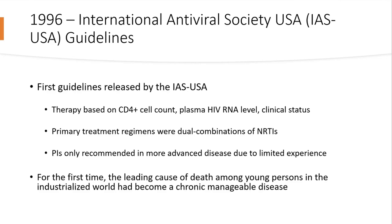In 1996, the mid-90s were a very busy time for ART development. This was when the first set of guidelines were released by the International Antiviral Society, recommending therapy based on CD4, plasma RNA levels, and patient clinical status. Treatment was typically reserved for fairly advanced disease, driven by toxicities and limited experience. Protease inhibitors were generally recommended in more advanced disease. Importantly, HIV was the leading cause of death among young persons at the time, but these therapies made it start to feel, for the first time, like a chronically manageable disease.